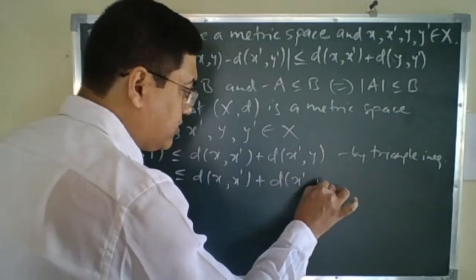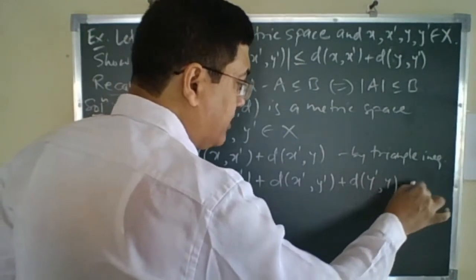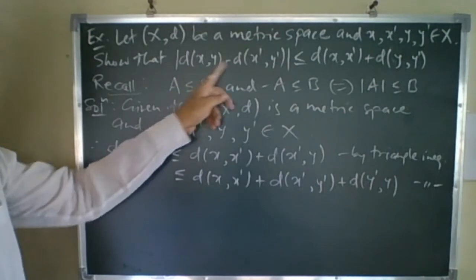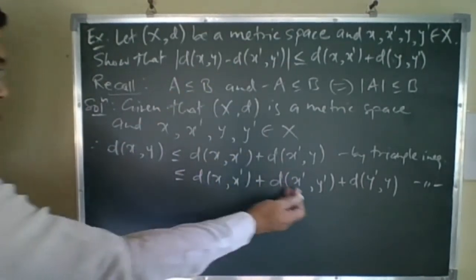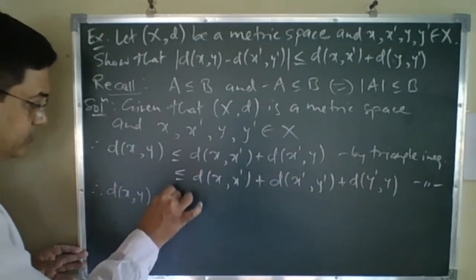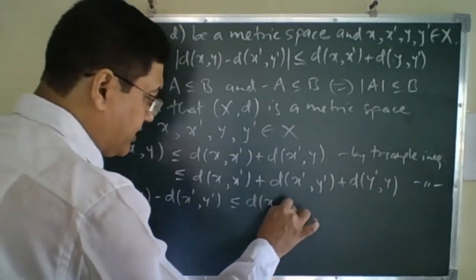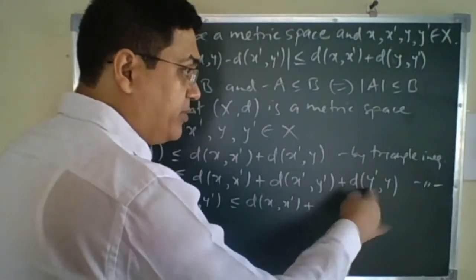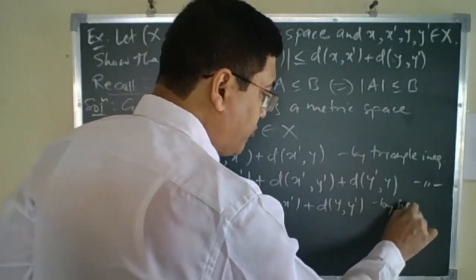Further, D(x',y) ≤ D(x',y') + D(y',y) again by triangle inequality. Combining these and shifting D(x',y') to the other side, we get D(x,y) − D(x',y') ≤ D(x,x') + D(y,y') by symmetric property.